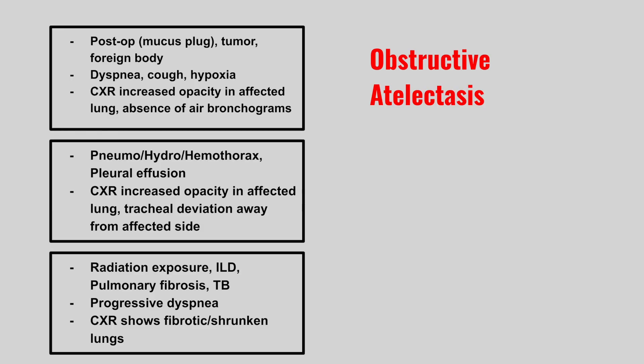Next, we have a patient with a pneumothorax, hydrothorax, hemothorax, or pleural effusion. Chest x-ray shows increased opacity in the affected lung and tracheal deviation away from the affected side. This is compressive atelectasis.